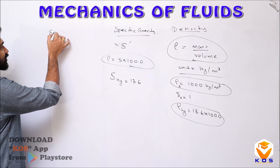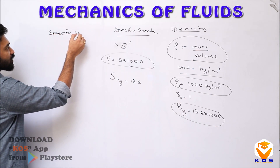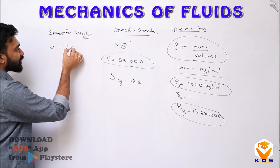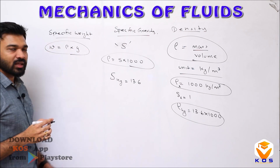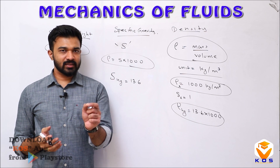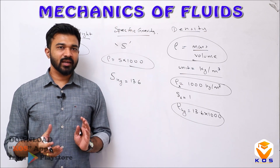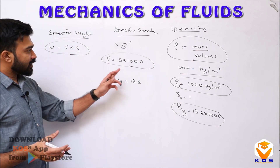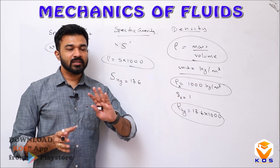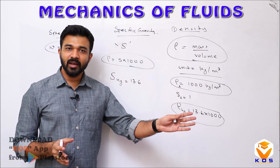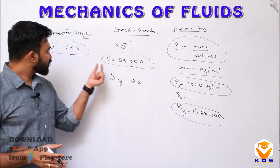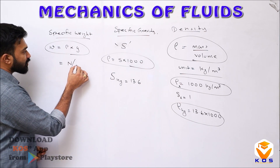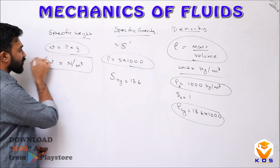Next, we will learn specific weight, represented by small w. Density multiplied by gravity gives the specific weight. Force equals mass into acceleration; with gravity as acceleration, force equals m into g. So when mass in kilograms is multiplied by acceleration, the unit will be Newtons. Therefore, the unit for specific weight is Newtons per meter cube.